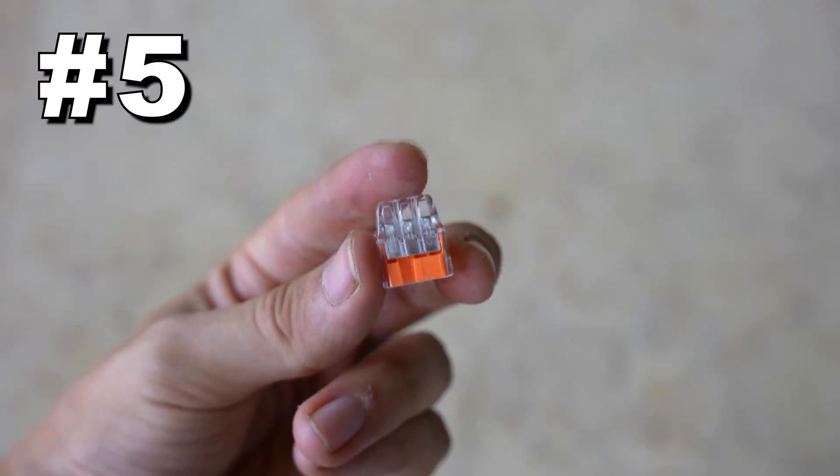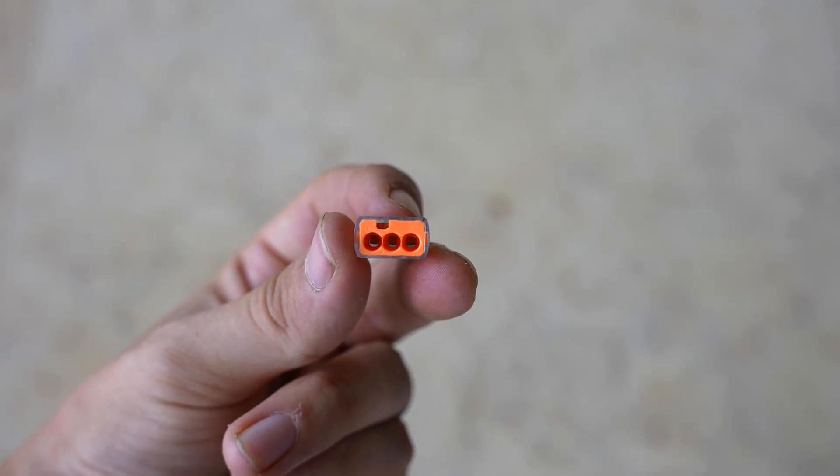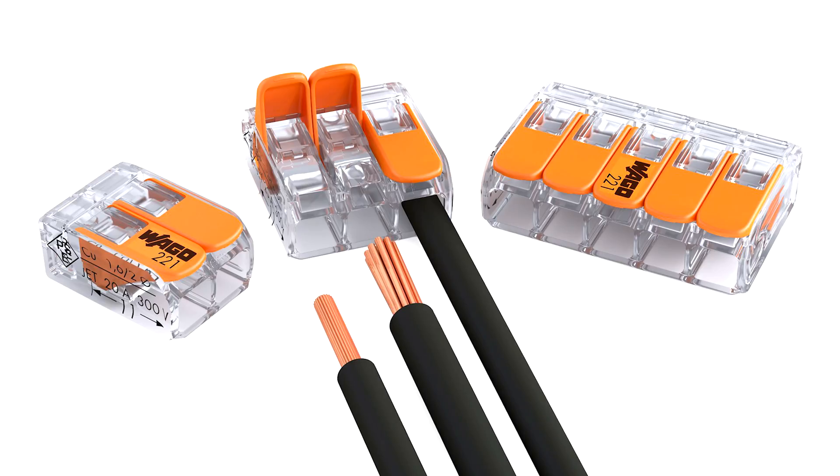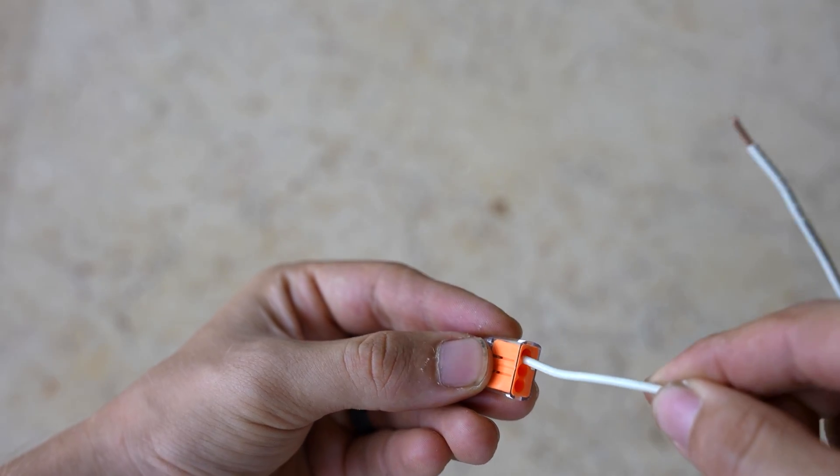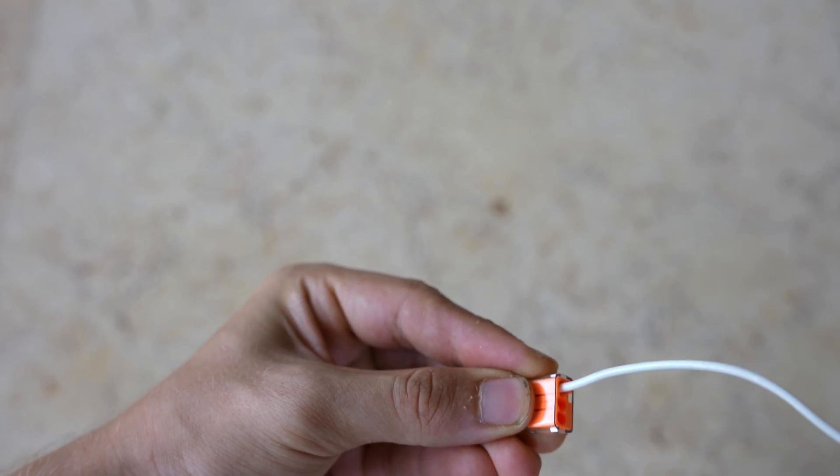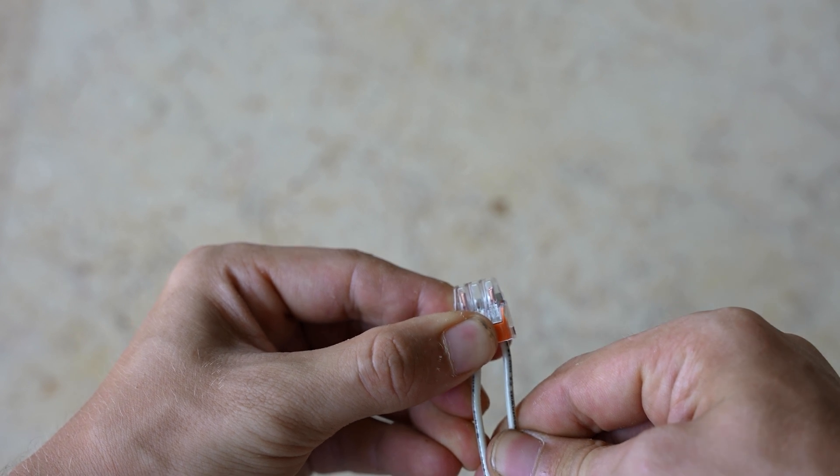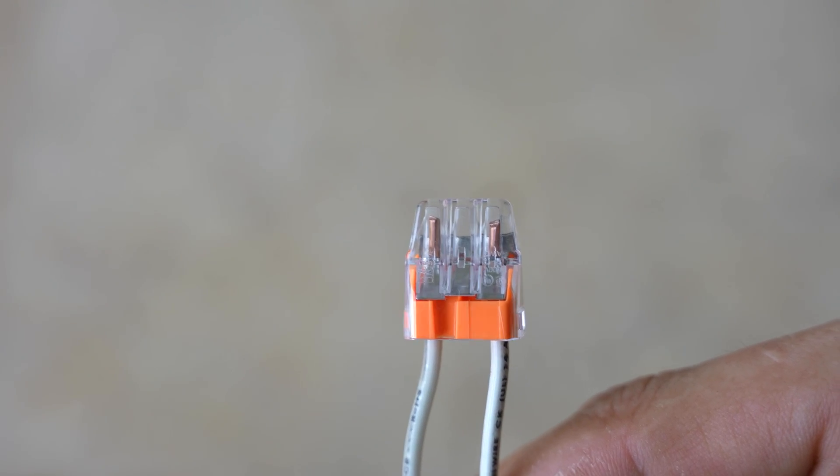Number five is push-in connectors. This one right here is very much like the transparent WAGO connector I mentioned earlier, but without the little levers. All three slots are connected by a little metal bar, so it doesn't matter which slot the wires go into. Firmly push the wires in and the connection is complete. But don't forget to do the little tug test just in case.